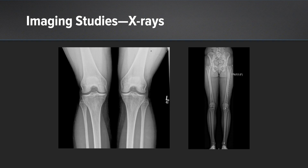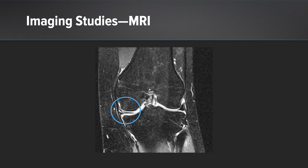Of note, I confirmed neutral alignment with full-length standing imaging. Here's the MRI of the left knee. You can see that there's a medial meniscus tear there. I'd anticipate it being a simple tear, in which case I was going to repair it, or if there was a complex component, maybe remove part of this tear.